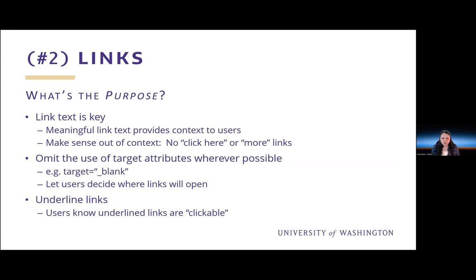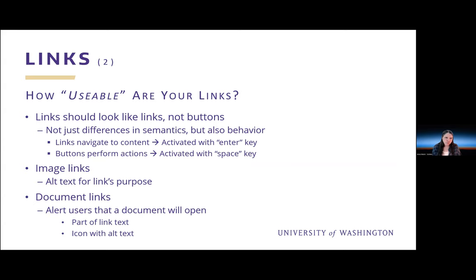Another thing you can do for more accessible links is to underline them. Ever since the very first specification of the web, links were underlined — users know underlined links are clickable. It's popular to make links look like buttons, but there is a problem with this. The differences in semantics between links and buttons mean each element has its own set of attributes and behaviors. Links navigate to content and are activated on the keyboard using the enter key. Buttons perform actions and are activated using the space key.